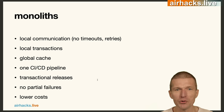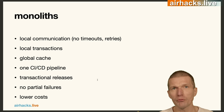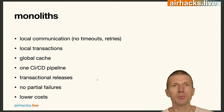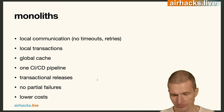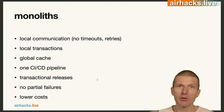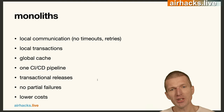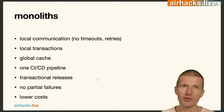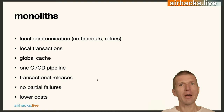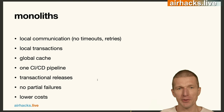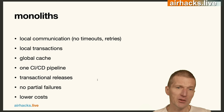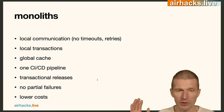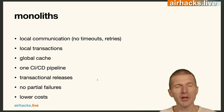Why are monoliths great? Local communications, no timeouts, no retries, local transactions, no two-phase commits, no saga patterns, no state machines. We have a global cache. With a monolith, you have one CI/CD pipeline and you can ship new versions transactionally — no need to ship microservices in the right order. You ship one thing and it works. Transactional releases, no partial failures — either the entire thing is gone or it's working. Usually lower cost too — one Lambda is cheaper than five communicating ones.